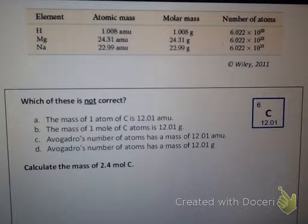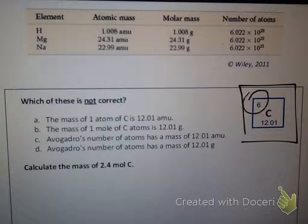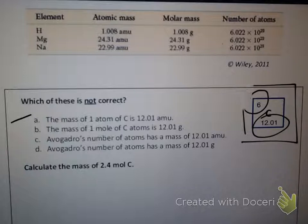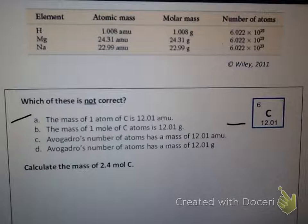Here's a multiple choice question. It shows the periodic table box for carbon: atomic number six, average atomic mass 12.01. Answer A says: the mass of one atom of carbon is 12.01 amu. Is that correct? Yes — amu is the atomic mass unit, the average atomic mass is 12.01, so that's correct. We want to find which answer is NOT correct.